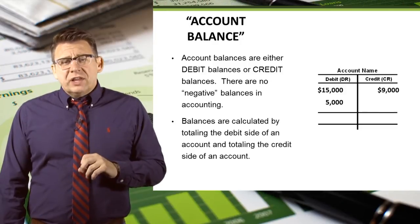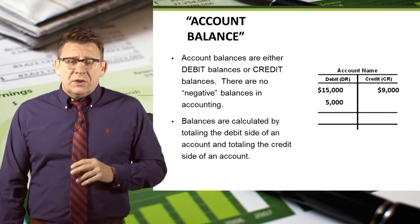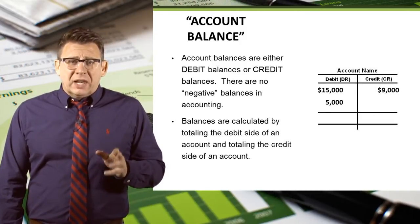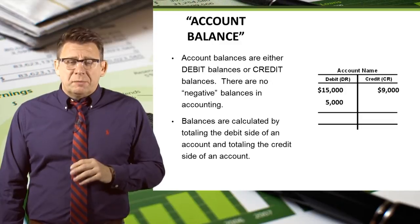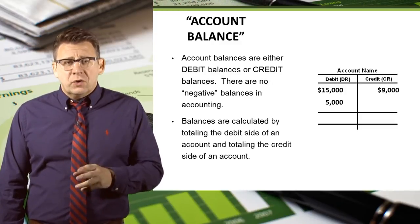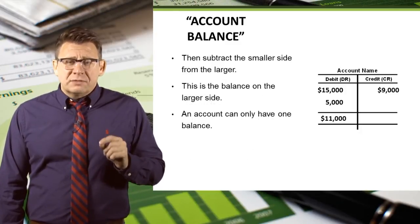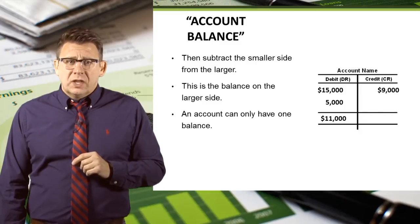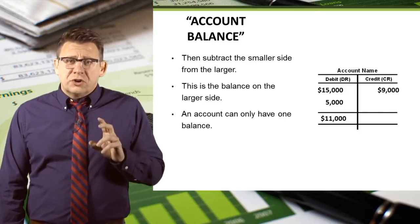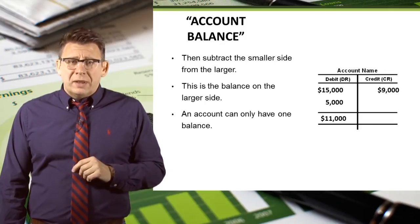Account balances are either debit balances or credit balances. There are no negative balances in accounting. Balances are calculated by totaling the debit side of an account and totaling the credit side of the account, then subtracting the smaller side from the larger side. This is the balance that goes on the larger side. An account can have only one balance.